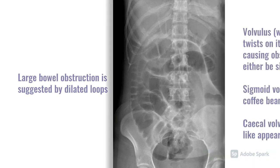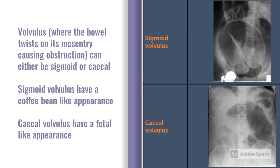The next examples show what's known as volvulus, which is where the bowel itself twists on its mesentery, causing an obstruction as it does. These are either sigmoid, in which case you get a coffee bean-like appearance, or cecal, in which case you have more of a fetal-like appearance.